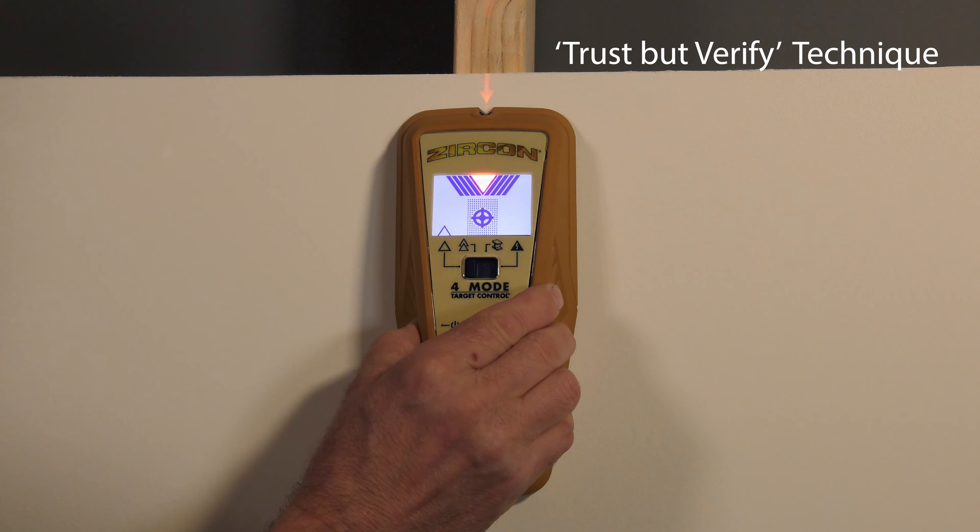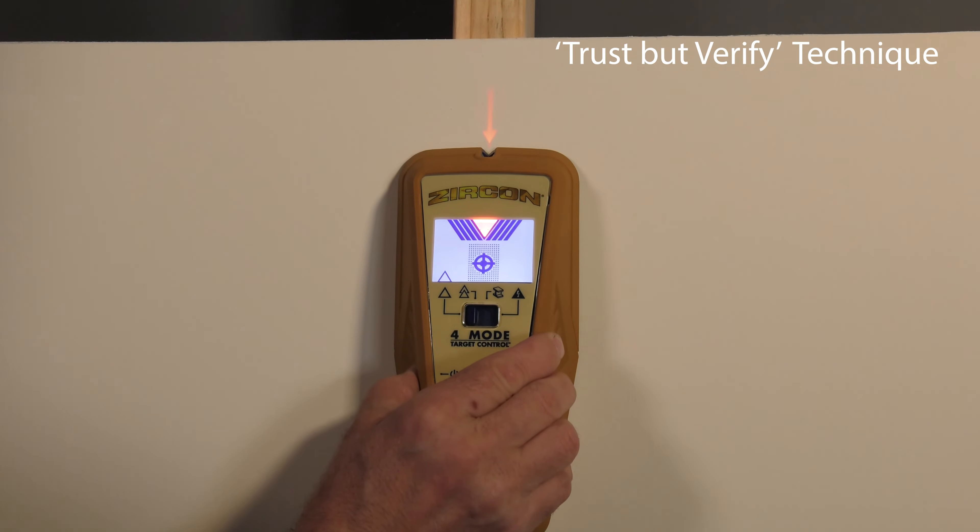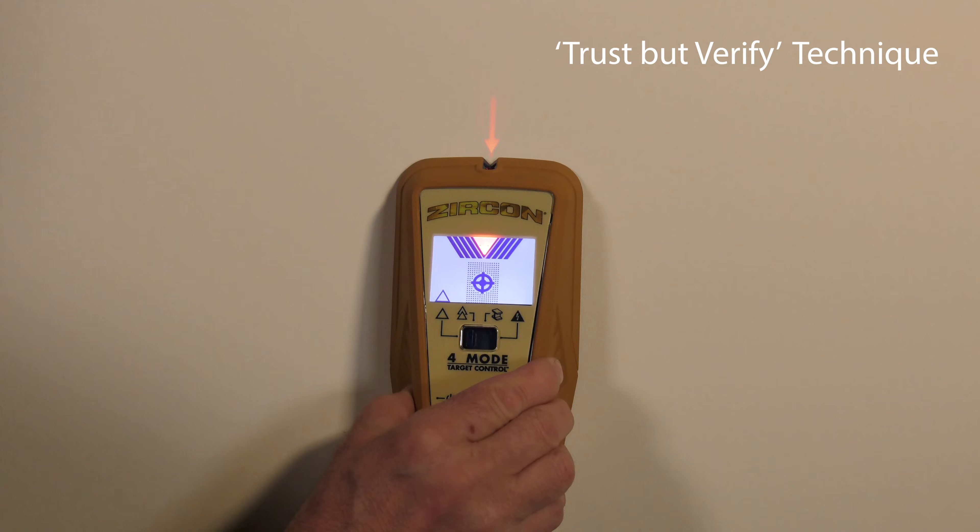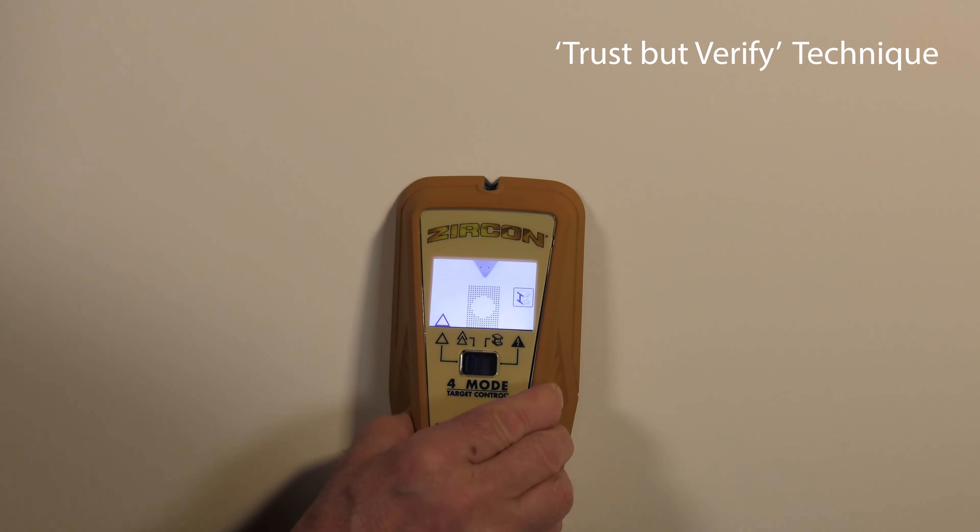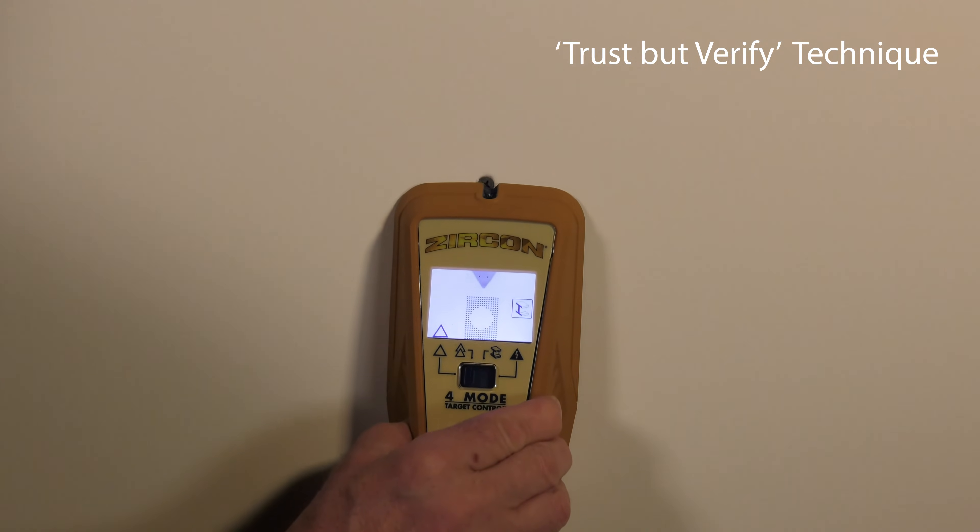Such as nails, screws, and protector plates. When the crosshairs show in TC mode, run the scanner vertically up and down the stud. The stud indicators will all turn off over screws and other metal, then turn on again when the stud is clear of metal.